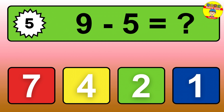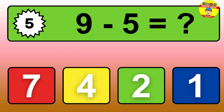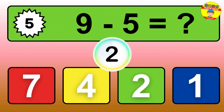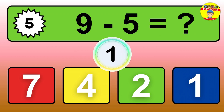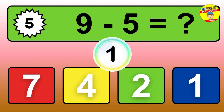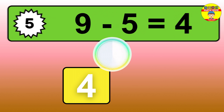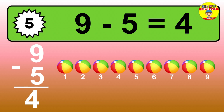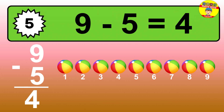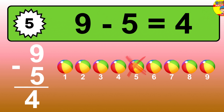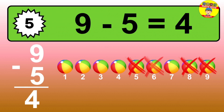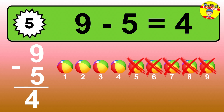Question five: nine minus five equals what? So the answer is, nine minus five is four. Let's count it. One, two, three, four.